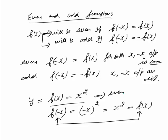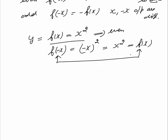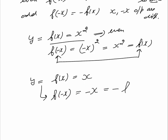Now consider y = x. Then f(minus x) = minus x, and since f(x) = x, we have f(minus x) = minus of f(x). This is an odd function. So this way you can see that if f(minus x) equals minus f(x), that makes it an odd function.